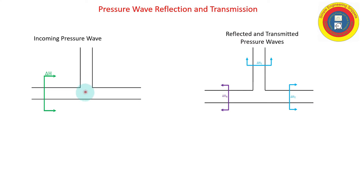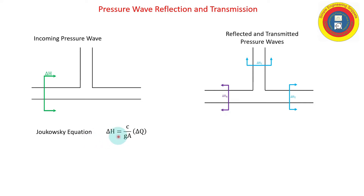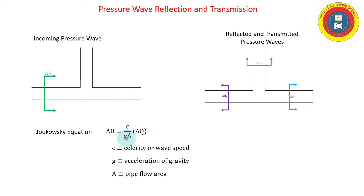Here's the situation for a three-pipe junction: I have an incoming wave denoted as delta-h that interacts with this three-pipe junction. There will be transmitted waves in the downstream pipes and a reflective wave in the pipe with the incident wave. The basis for this is the Joukowski equation, which tells us that the head increase due to a change in flow is equal to the change in flow times the celerity divided by the acceleration of gravity and the pipe area. The grouping of celerity divided by gravitational acceleration accounts for the compressibility of the liquid and the elasticity of the pipe.